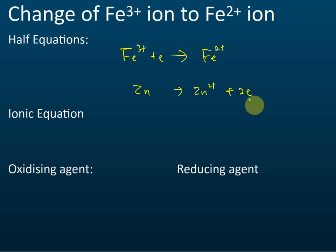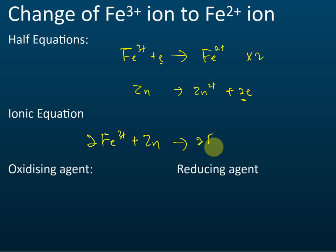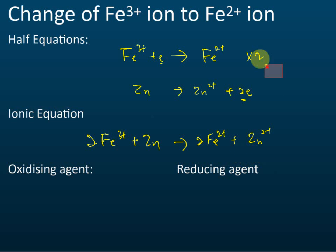To write the ionic equation, we add two electrons to make the charge zero on the right-hand side. Since one equation has two electrons and the other has one electron, we multiply the second by two. The result is: 2Fe³⁺ + Zn → 2Fe²⁺ + Zn²⁺. This is the ionic equation.